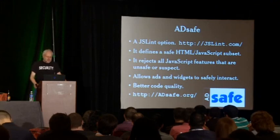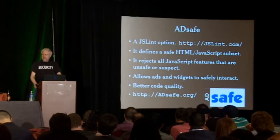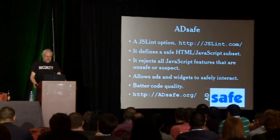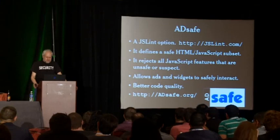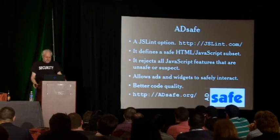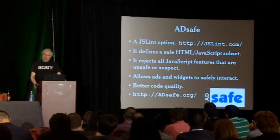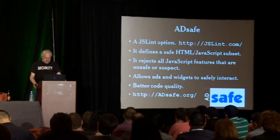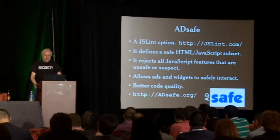AdSafe is implemented as an option on JSLint, the JavaScript code quality tool. If you're not using JSLint, there's something seriously wrong with your code. It defines a safe HTML and JavaScript subset, rejects all JavaScript features that are unsafe or suspect, and allows ads and widgets to safely interact for the benefit of the user. Because it's implemented in JSLint, you also get much better code overall, since JSLint insists you clean up dangerous patterns — not just from a security perspective, but for reliability, readability, and maintainability.